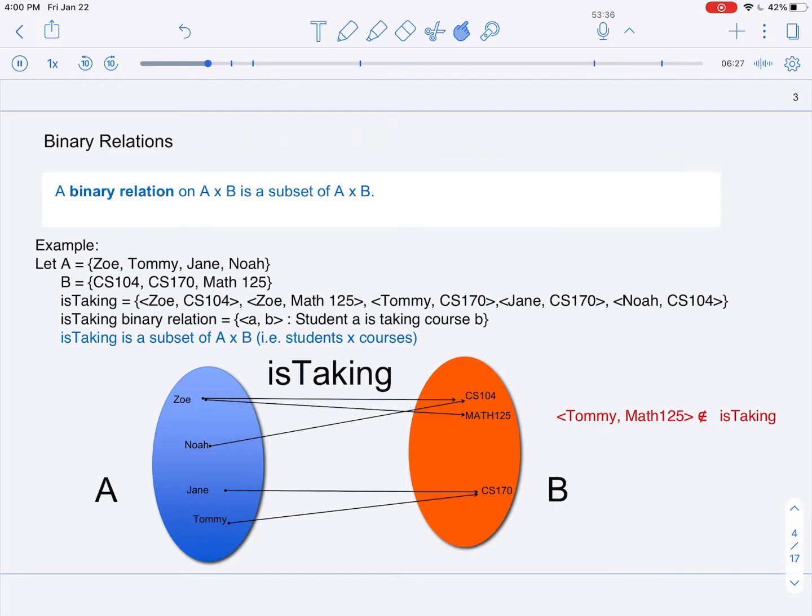So the ordered pair Tommy, Math-125, is not in the binary relation is-taking.